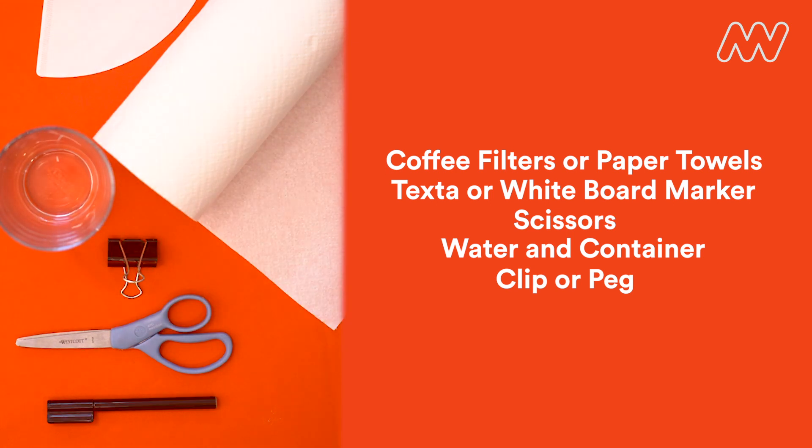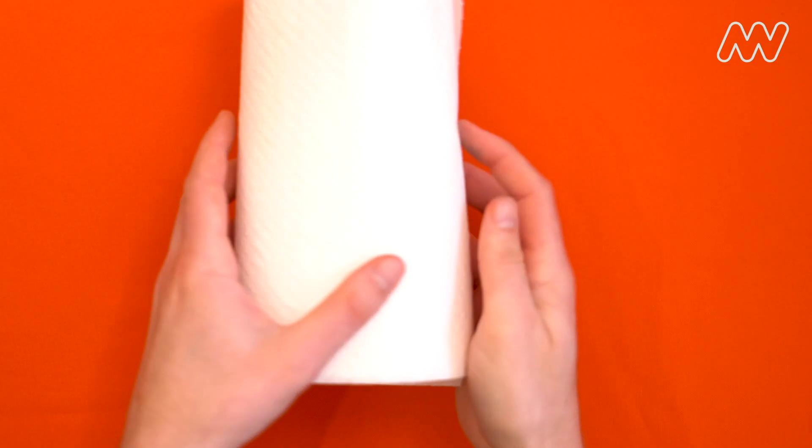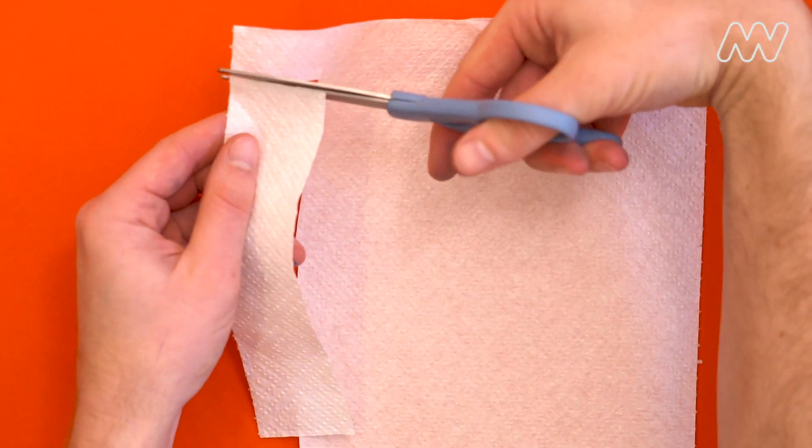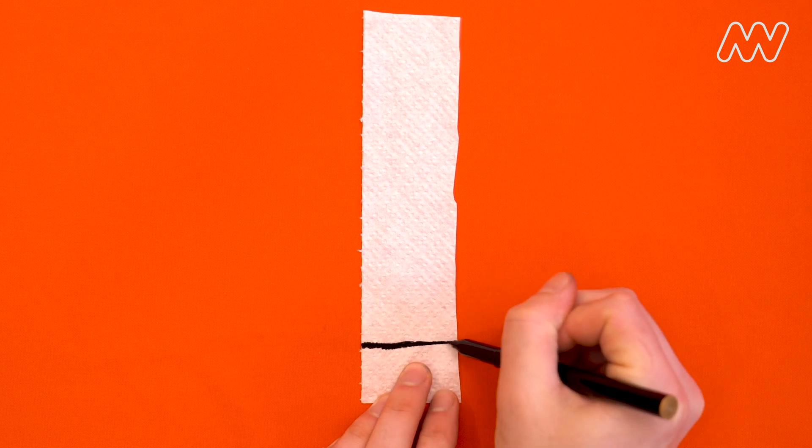Start by cutting a strip of your paper or coffee filter around 2cm by 15cm. Take your marker and draw a thick line about 3 or 4cm from the bottom of the paper.